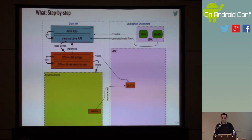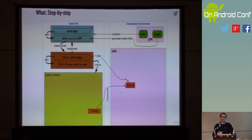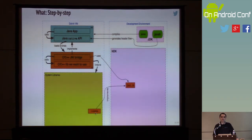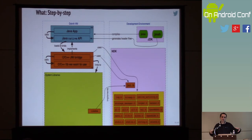So who provides jni.h? jni.h is the header file describing the functions we can use to bridge from Java world to the native world. At runtime, these functions are implemented by something called libdvm, which is part of the Dalvik virtual machine. However, jni.h is just one thing — it gives us a simple set of functionality to bridge the gap between the two language environments.